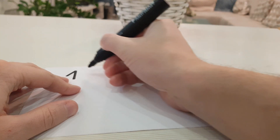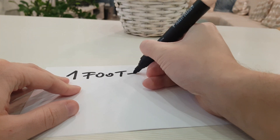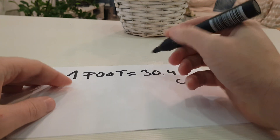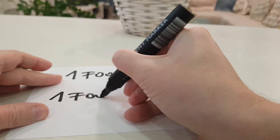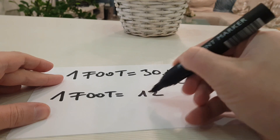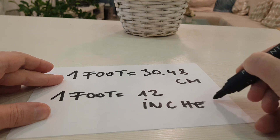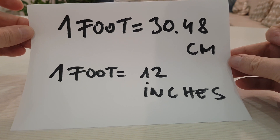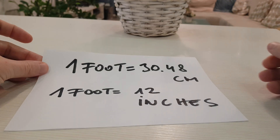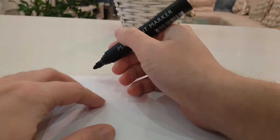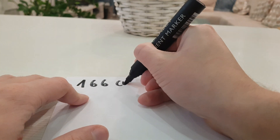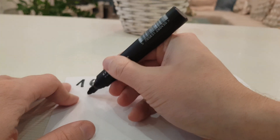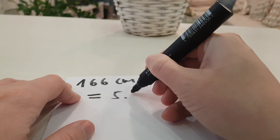Here is the formula: 1 foot equals 30.48 cm. We divide 166 cm by 30.48 cm and the result is 5.45.